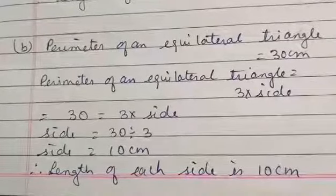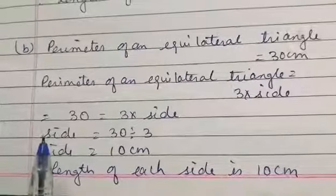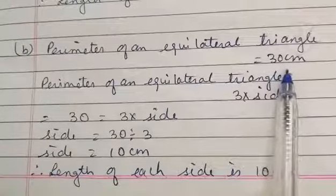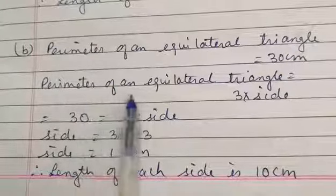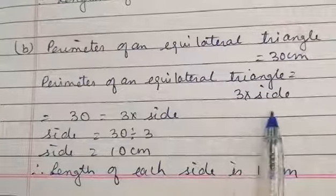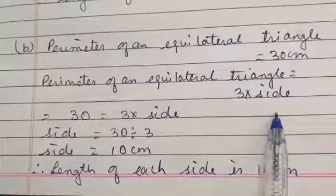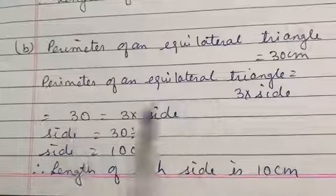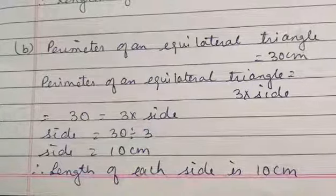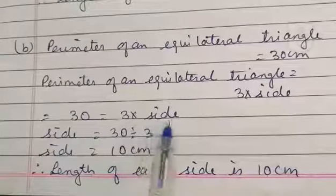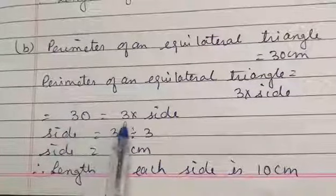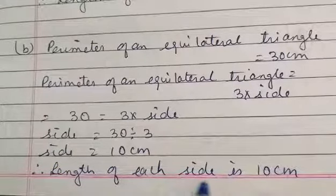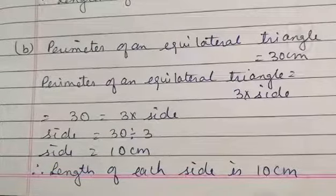Part B of question 11: If the string is used in the form of an equilateral triangle, the perimeter is 30 centimeters. The formula is: Perimeter of an equilateral triangle = 3 × side. So 30 = 3 × side. To find the side, we divide 30 by 3. 30 ÷ 3 = 10. Therefore, the length of each side is 10 centimeters if the string is used in the form of an equilateral triangle.